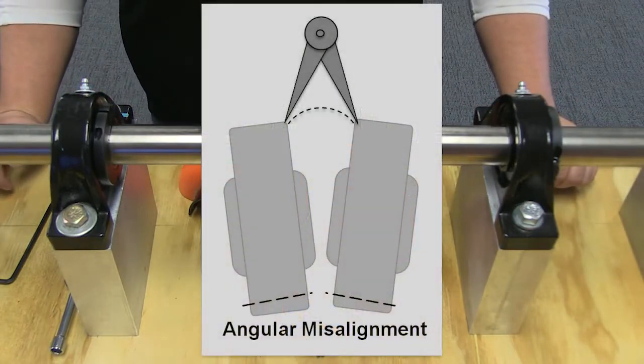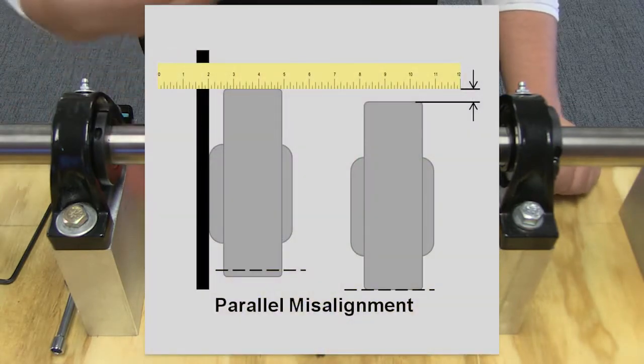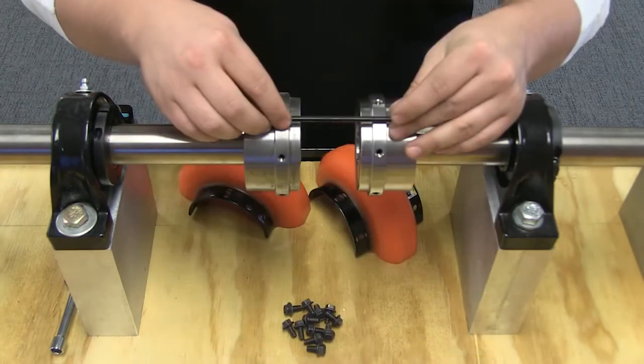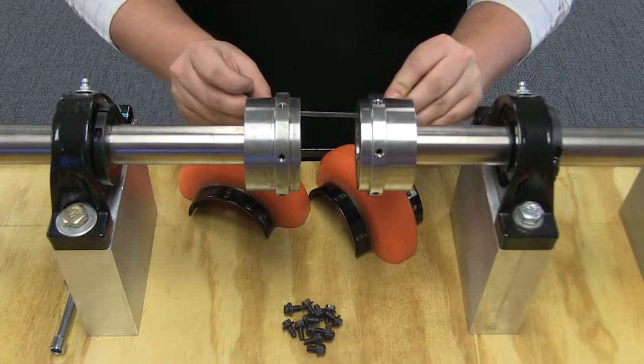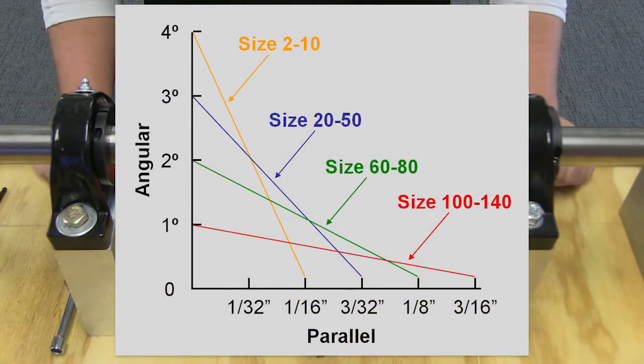To correct for angular misalignment, use calipers to check the gap between the hubs. To correct for parallel misalignment, place a straight edge across the hub flanges in two places at 90 degrees from each other. In both cases, adjust your shims as needed until the equipment is within the acceptable misalignment range for installation.